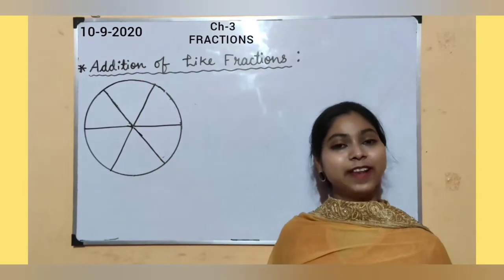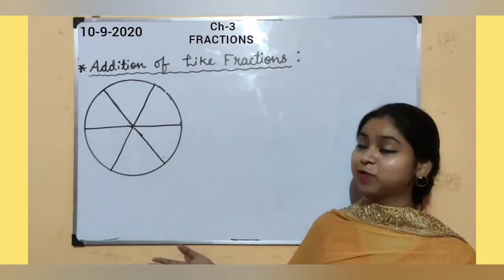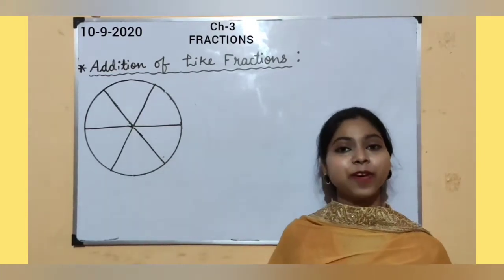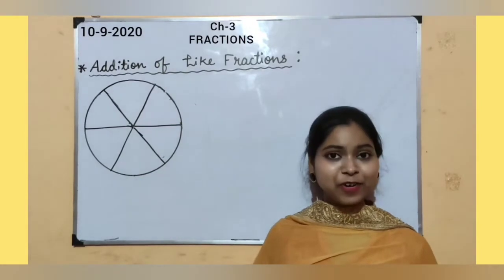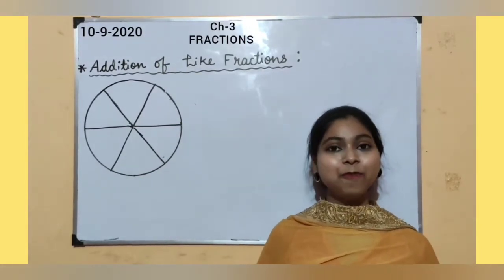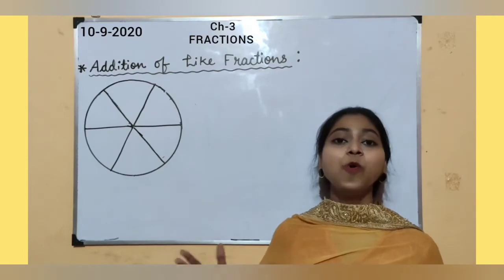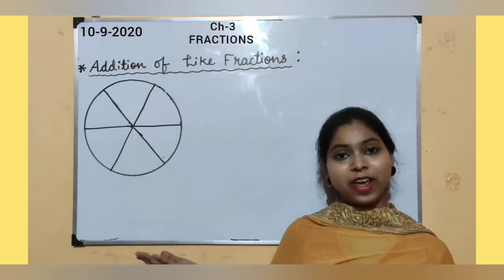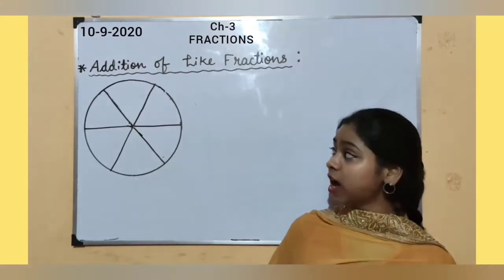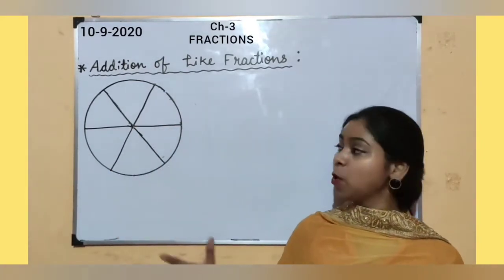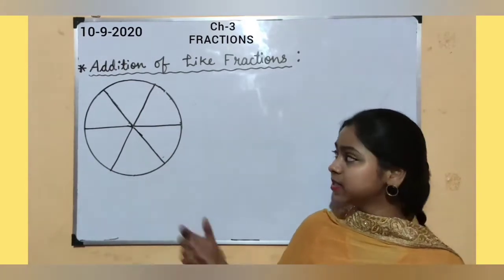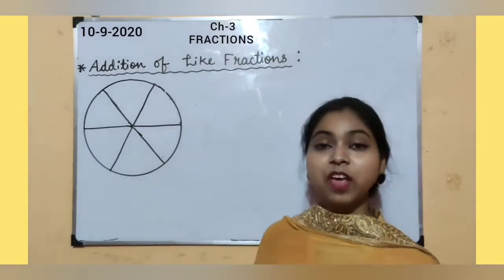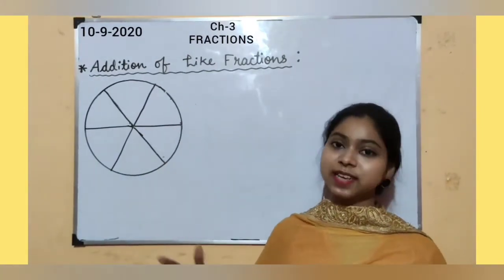Addition of like fractions. Let's learn this concept through an example. Here in front of you there is a figure — this figure is of a pizza, and I know you all like to eat pizza very much. Now there is a mother who has bought pizza for her two kids. The kids' names are Shreya and Bria. Now Shreya, can you just tell me how many total parts are there in this pizza? Let's count it: 1, 2, 3, 4, 5, 6. So there are total 6 parts in this pizza.